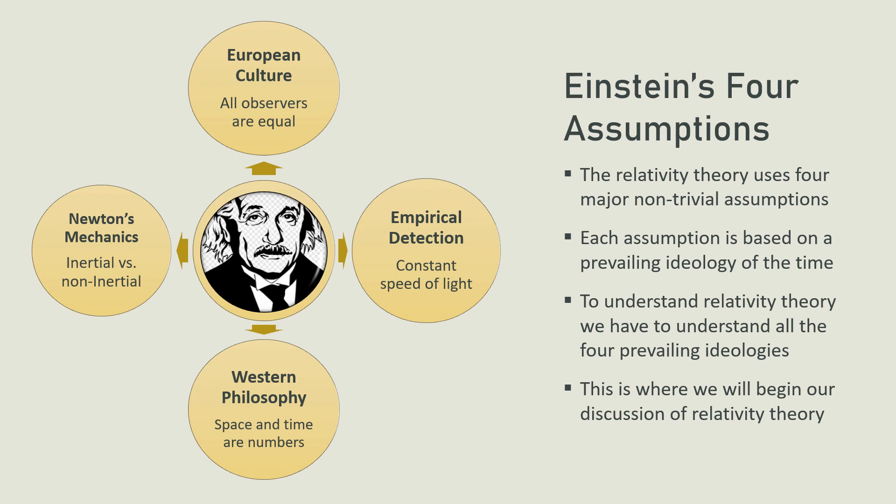Einstein's two theories of relativity — the special theory and the general theory — are rooted in four assumptions. The first is that the speed of light propagation is constant. The second is that the effect of inertia, which Newton postulated as the backward push we experience while accelerating forward, is basically a gravitational effect, such that the distinction between inertial and gravitational masses created by Newton is false.